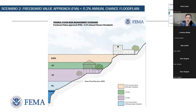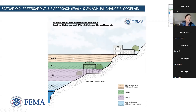Here is an example of what the FFRMS floodplain looks like currently utilizing FEMA's partial implementation policies. On the left of the screen is a residential structure — a non-critical action. To the right is a fire station — a critical action. Notice the light blue 1% floodplain just above the channel and then the three FFRMS layers right above it: the plus-two and plus-three as the freeboard values and the 0.2% on top.